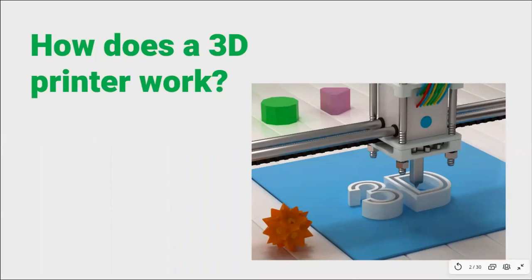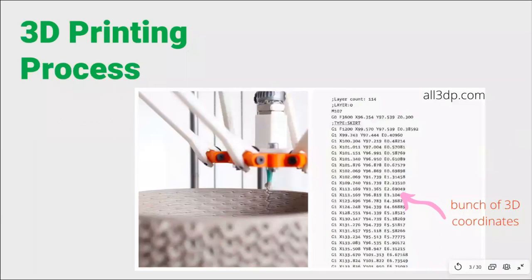Have you ever wondered how a 3D printer works? A 3D printer is a machine that can create three-dimensional objects or models that are created using a 3D modeler. Essentially, the mathematics behind a 3D model is the idea of coordinate space. A 3D model is a bunch of coordinates in space that describe the entire 3D object. When these coordinates are fed into a 3D printer, the printer's nozzle will follow all the coordinates systematically until it completes the whole project.